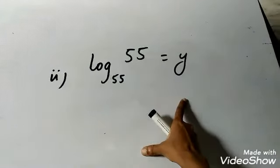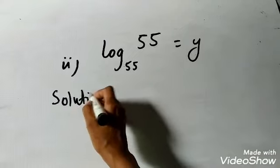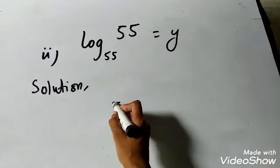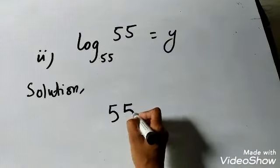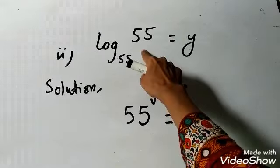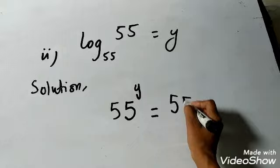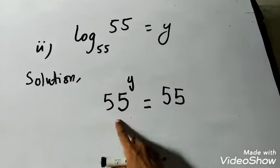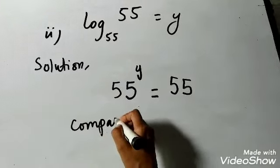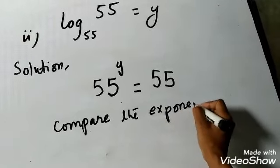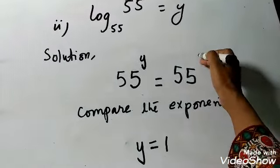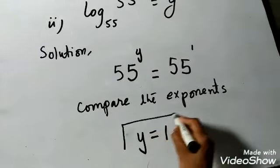Here the question says: find the value of y. The question is in logarithmic form. Convert to exponential form: 55 raised to the power y is equal to 55. Since the bases are the same on both sides — both are 55 — we compare the exponents. Since there is no written exponent on the right side, that means the exponent is 1. So y is equal to 1.